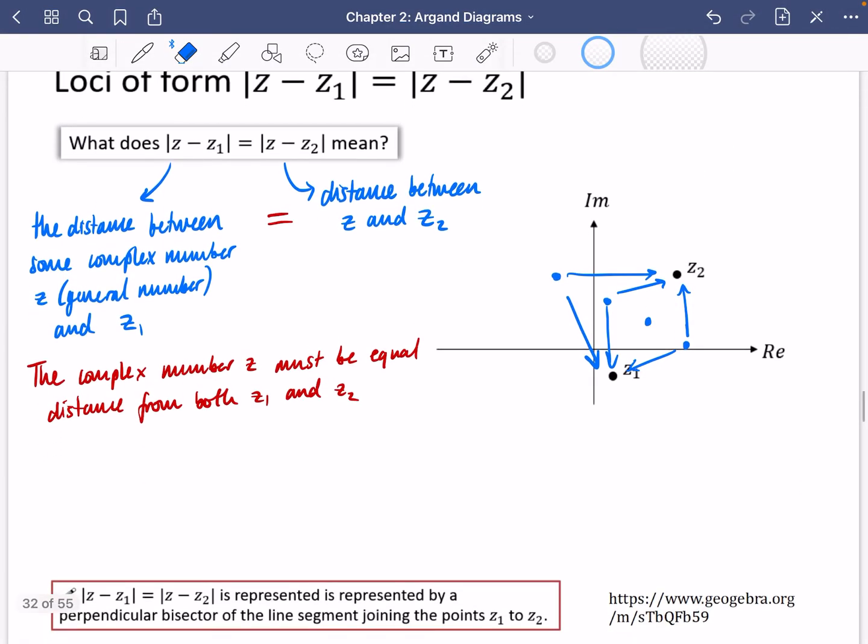And that's what I've got written down here. I have written that this particular loci is represented by a perpendicular bisector of the line segment joining the points z1 and z2.